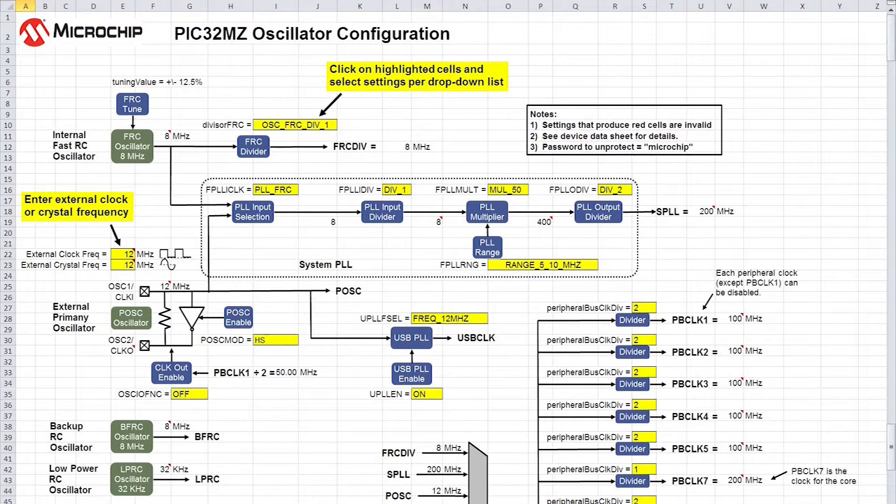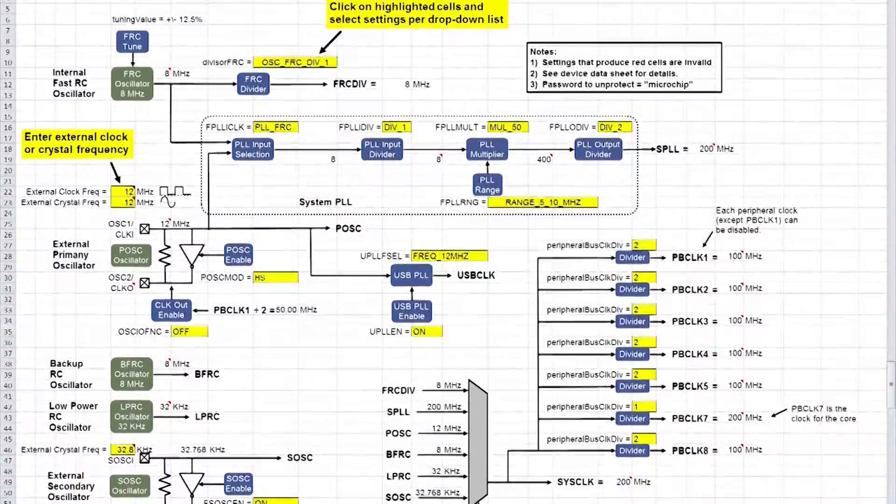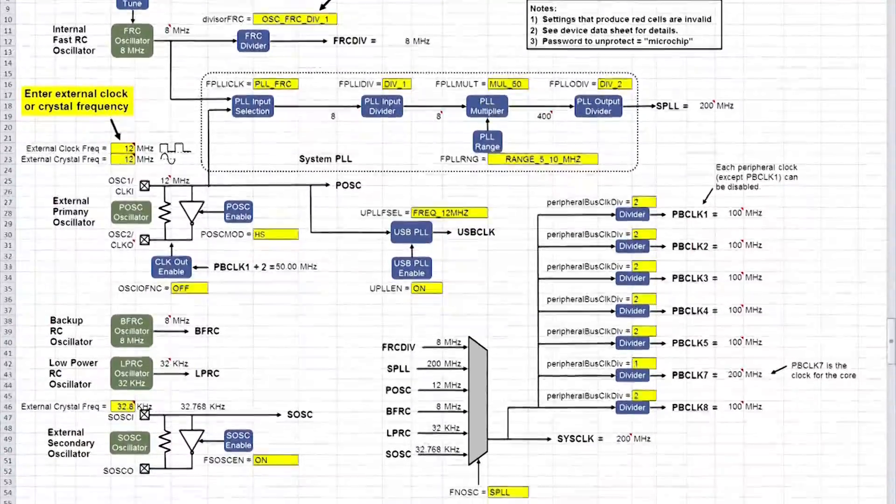Hi, my name is Bob Smith and I'm a technical training engineer here at Microchip. I've created a graphically oriented spreadsheet that will help you configure the oscillator on the PIC32.